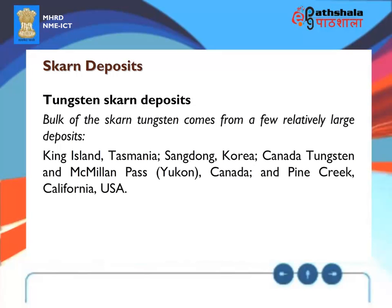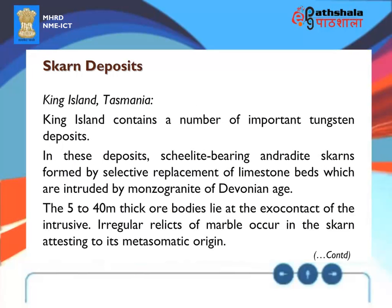Tungsten skarn deposits: The bulk of skarn tungsten comes from a few relatively large deposits — King Island, Tasmania; Tungsten and Macmillan Pass, Yukon, Canada; and Pine Creek, California, USA. King Island, Tasmania, contains a number of important tungsten deposits. In these deposits, scheelite-bearing andradite skarns formed by selective replacement of limestone beds intruded by monzogranite of Devonian age. The 5 to 40 meter thick ore bodies lie at the exocontact of the intrusive. Irregular relics of marble occur in the skarns, attesting to their metasomatic origin.